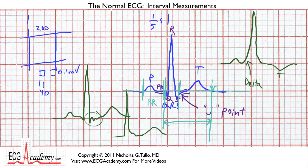Every now and then you'll see something unusual — a T wave and then a second bump following it. This is called a U wave. Some people think it's part of the T wave, but usually the U wave is a discrete separate signal and can be seen in certain abnormal conditions we'll discuss in the advanced course.